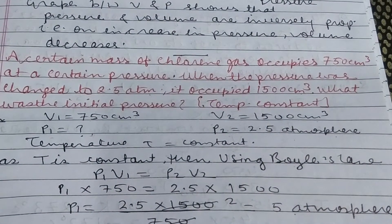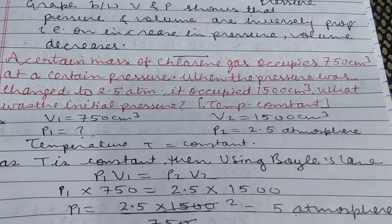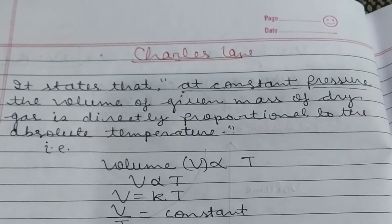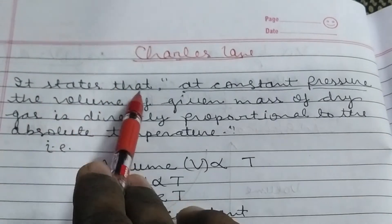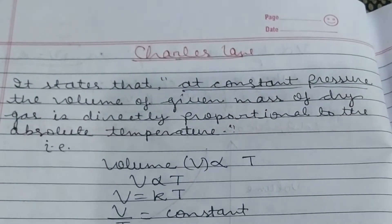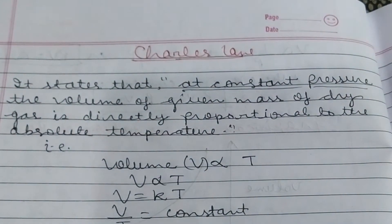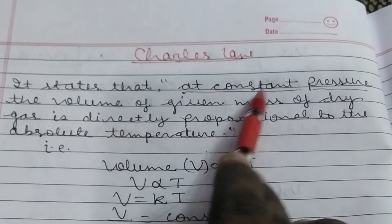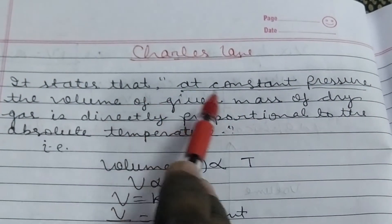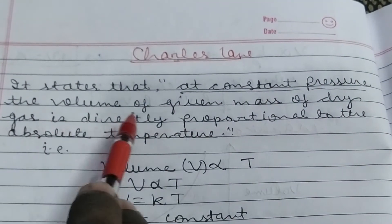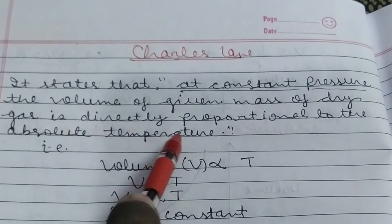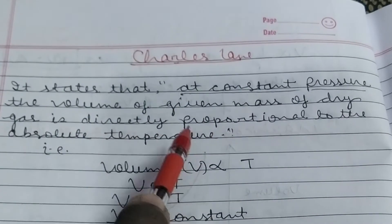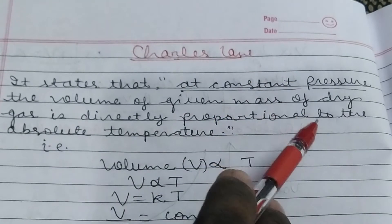Now we'll do one more law: Charles' law. Charles' law states that in this law, pressure is constant. At constant pressure, the volume of given mass of dry gas is directly proportional to absolute temperature. Absolute temperature is measured in Kelvin only.